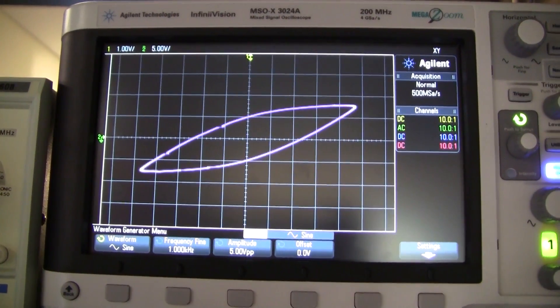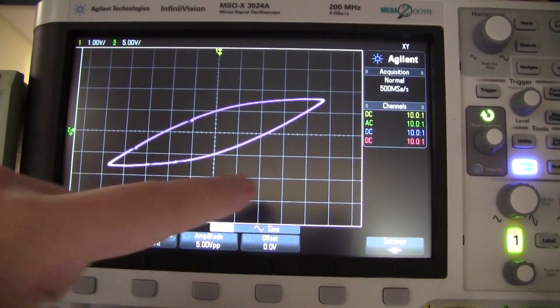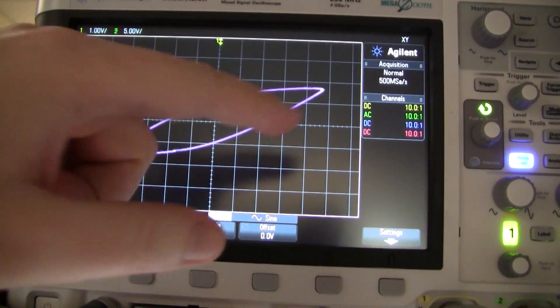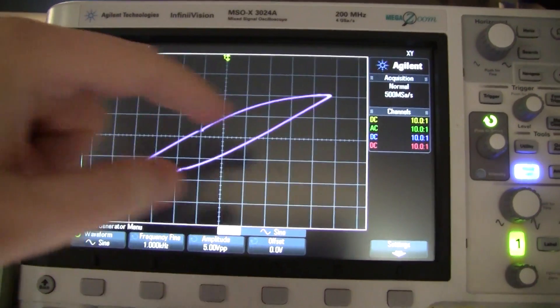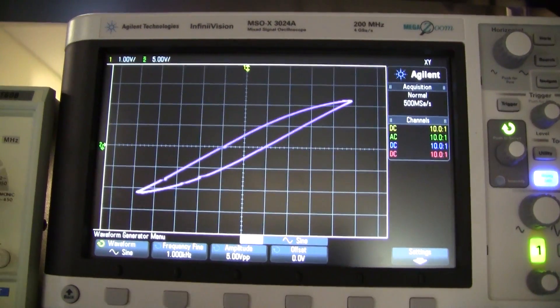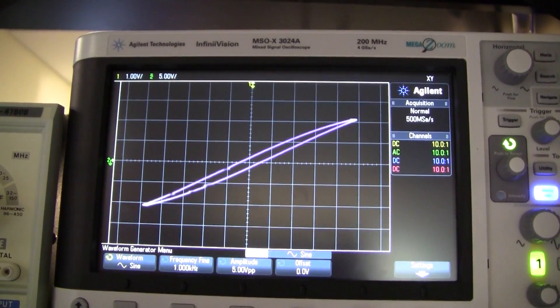And this actually represents a ferroelectric memory. There's a path dependence in the current, the charge versus voltage curve of the capacitor. This can be used to make ferroelectric memory.